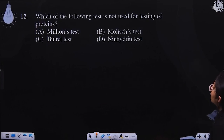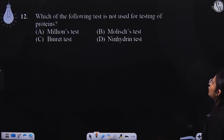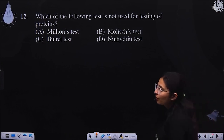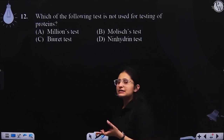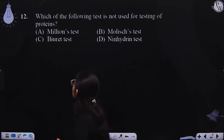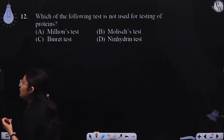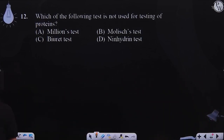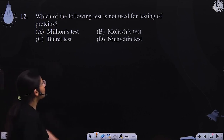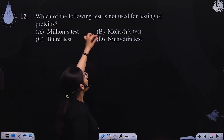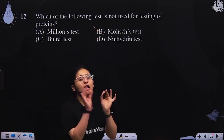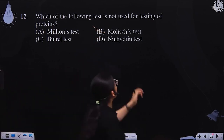Which of the following tests is not used for testing of proteins? Millon's test, ninhydrin, and Biuret can be used to test proteins, but the Molisch test is used for carbohydrates, not proteins.